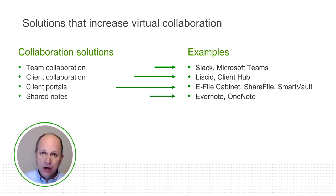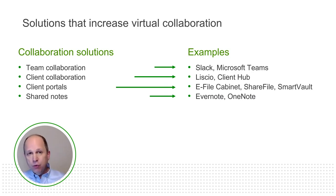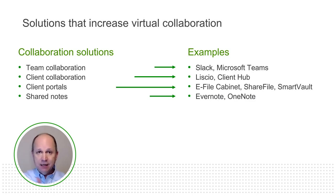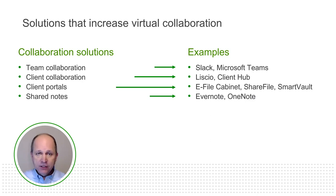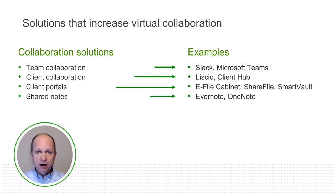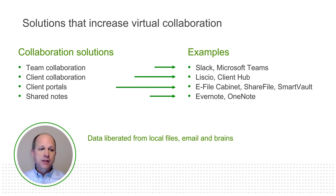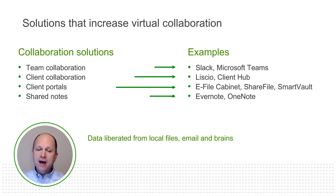Shared notes — back to Evernote and OneNote — pop up a lot. If there's one solution you want to implement to move the needle fastest on data liberation, it would be OneNote or Evernote, company-managed and shared across all team members. Start there, then fold in the other elements. With collaboration solutions, data is liberated from local files, email, and brains.